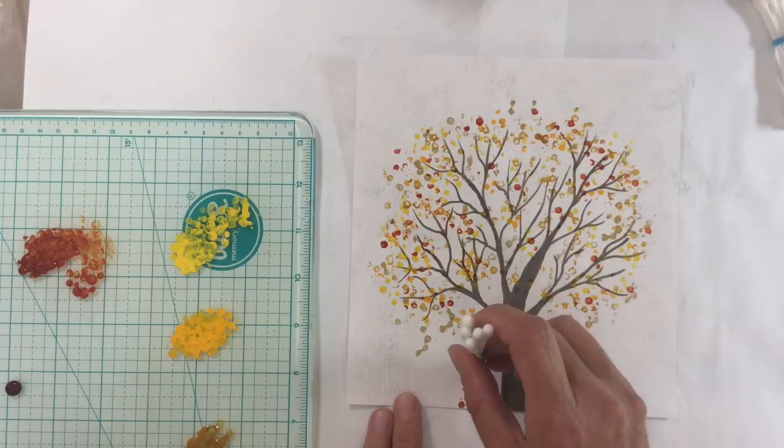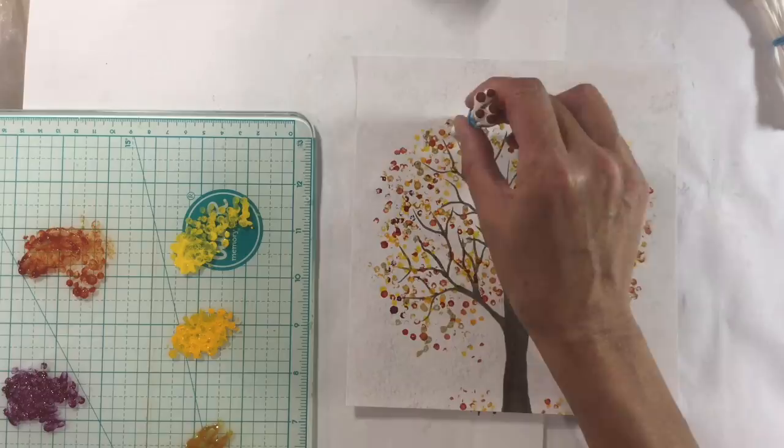And this colour here is quinacridone violet, which is just absolutely beautiful and reminds me of the maple leaves that I was drying the other day.